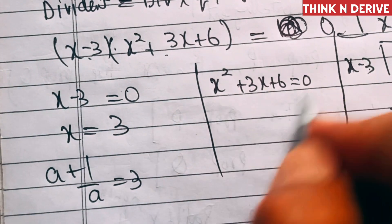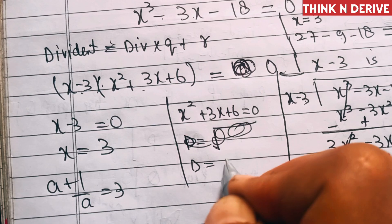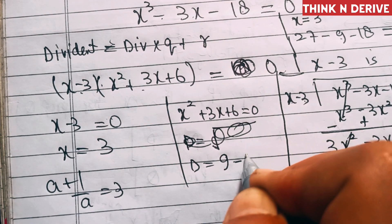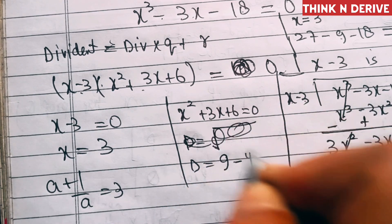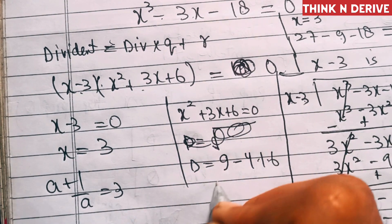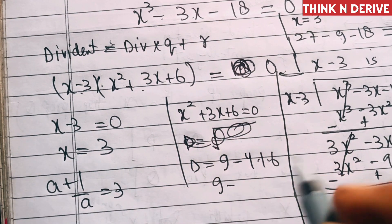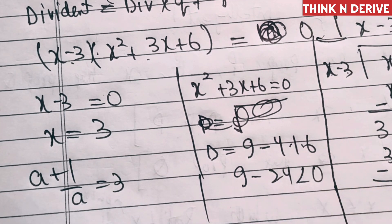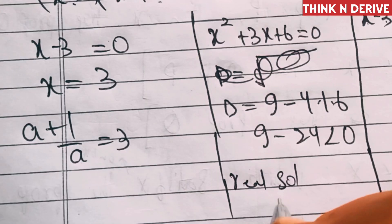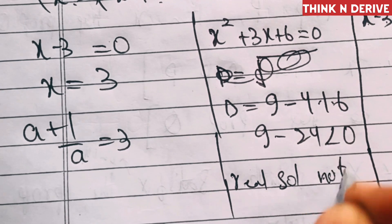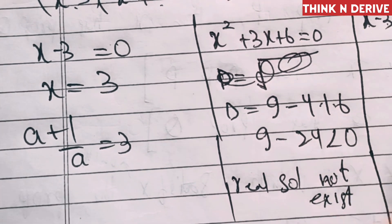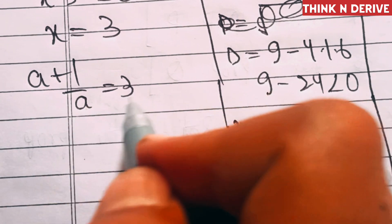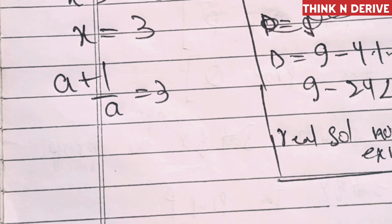For the quadratic factor x² + 3x + 6 = 0, the discriminant is b² - 4ac = 9 - 4(1)(6) = 9 - 24 = -15, which is less than 0. So no real solution exists from this factor. The only real solution is a + 1/a = 3.